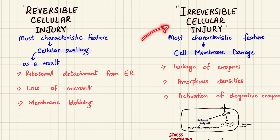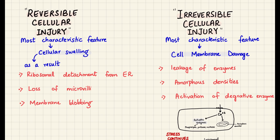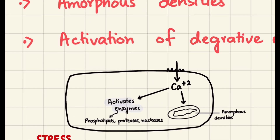However, if the stress continues, we move into irreversible cellular injury. The hallmark here is cell membrane damage. When the cell membrane gets damaged, enzymes start leaking out and calcium starts entering the cell. Calcium inside the cell is not a good thing — it starts getting into the mitochondria, where it forms amorphous densities, damaging the mitochondria.